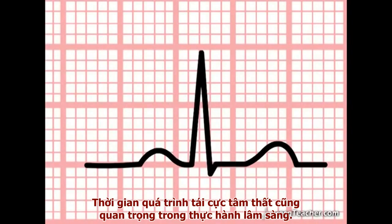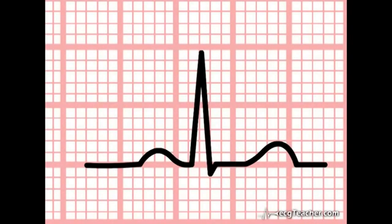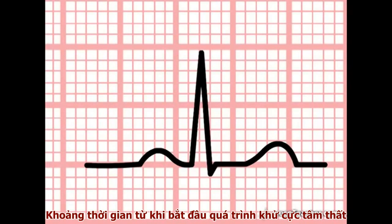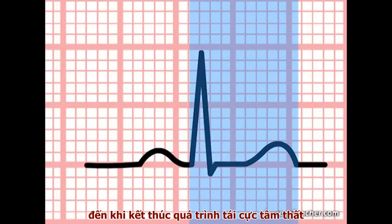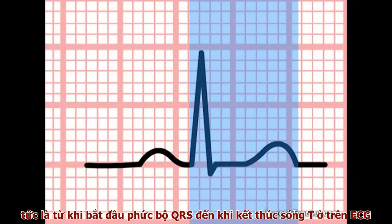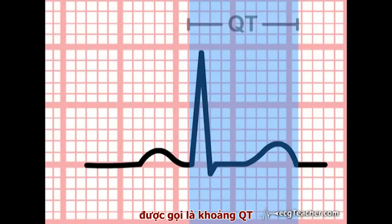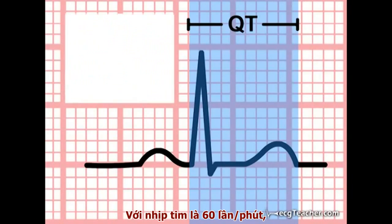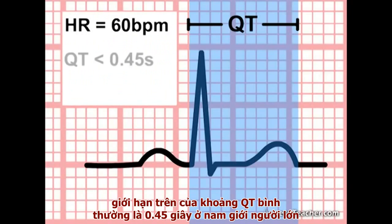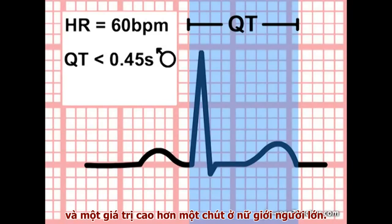The duration of ventricular depolarization is also important in clinical practice. The time between the onset of ventricular depolarization and the end of ventricular repolarization — that is, the beginning of the QRS complex and the end of the T wave on the ECG — is termed the QT interval. When the heart rate is 60 beats per minute, the QT interval should be less than 0.45 seconds in an adult male, with a slightly higher upper limit for adult females.